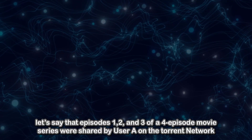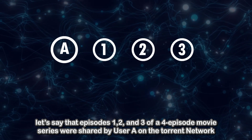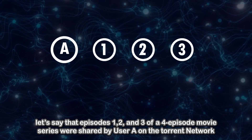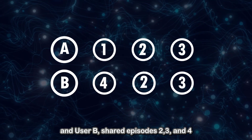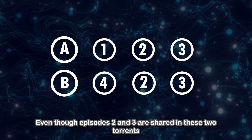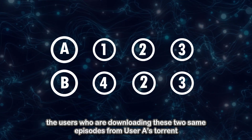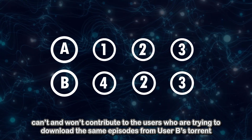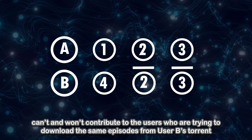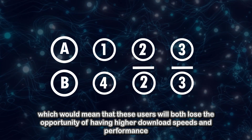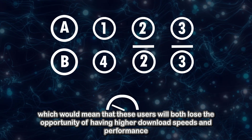To make this clear, let's say that episodes 1, 2, and 3 of a 4-episode movie series were shared by user A on the torrent network, and user B shared episodes 2, 3, and 4. Even though episodes 2 and 3 are shared in these two torrents, the users who are downloading these two same episodes from user A's torrent can't and won't contribute to the users who are trying to download the same episodes from user B's torrent, which would mean that these users will both lose the opportunity of having higher download speeds and performance.